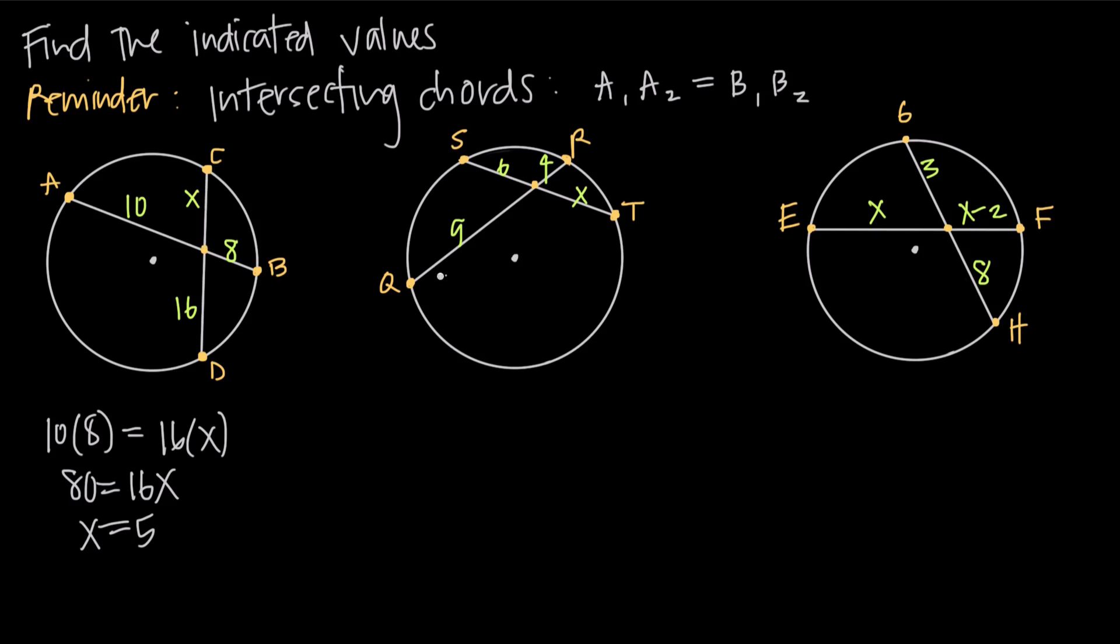We can do this here with another example. We have chord QR and chord ST. We know these lengths 9, 6, 4, and x. So if we look at the chord QR, we have lengths 9 and 4. So we'll say 9 times 4.